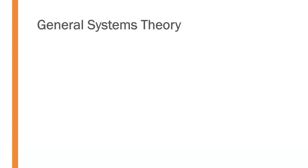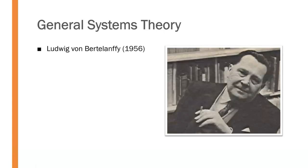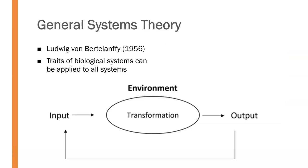The pivot point from classical to modern theories in organizational communication actually came from the field of biology with the proposal of general systems theory. In 1956, Ludwig von Bertalanffy, a Canadian biologist, suggested that the traits of a biological system – input, transformation, and output – could, in fact, be applied to any system.